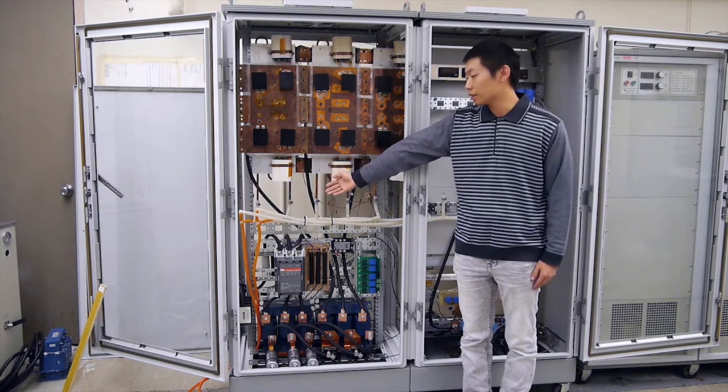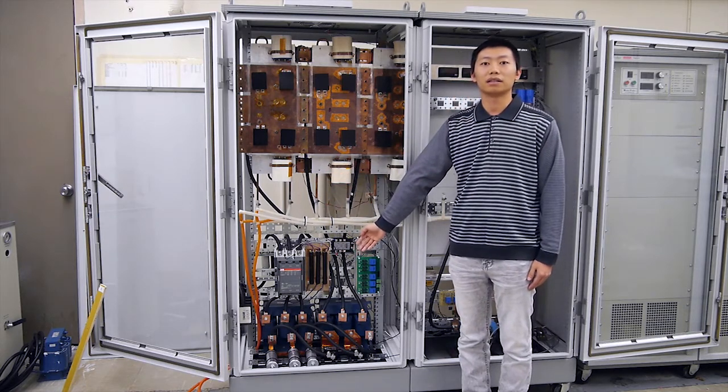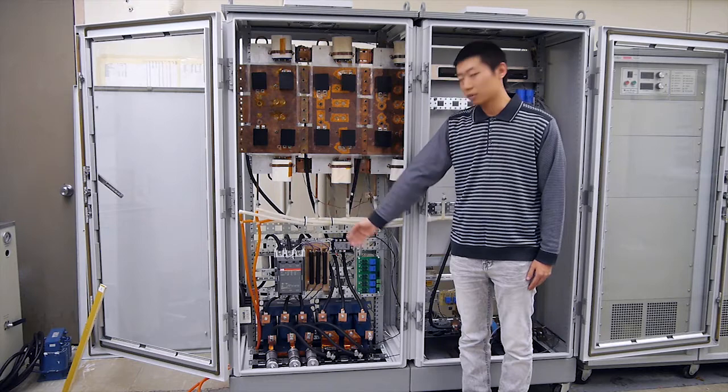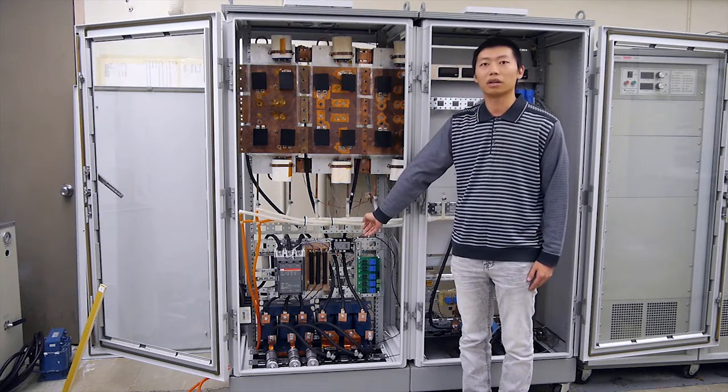At the bottom part, you can see the water cooling system, the LCL filter as grid interface, the capacitors, and some sensor and protection circuits of the converter system.